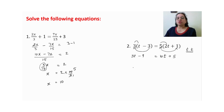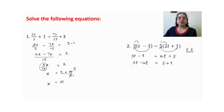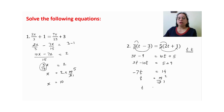अब variables को एक तरफ shift करेंगे — 10t को left hand side में shift किया, तो minus 10t, and minus 9 will become plus 9. Integer concept: signs are different, subtract the number, greater number sign will come in the answer — so t is equal to 9 plus 5 = 14. Minus 7 is in multiplication, so divide: 14 ÷ 7 = 2. Total negative signs = 1, which is odd, so answer will be negative — t = minus 2.